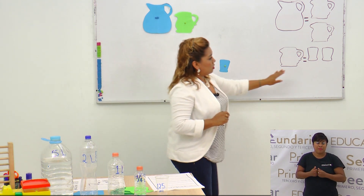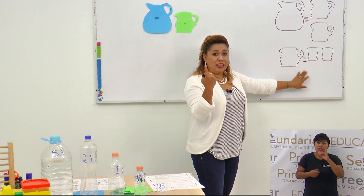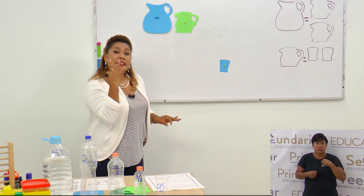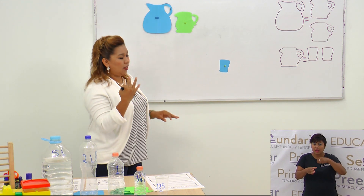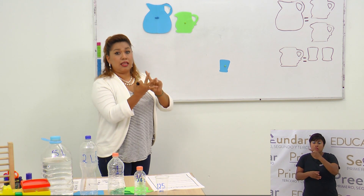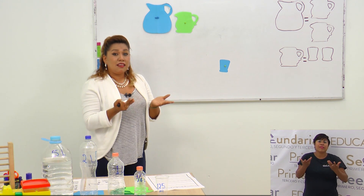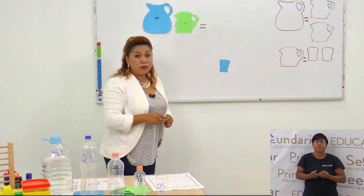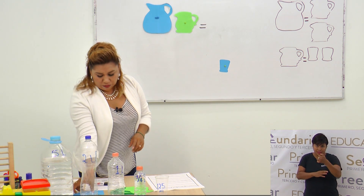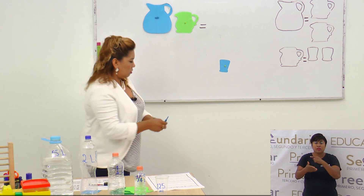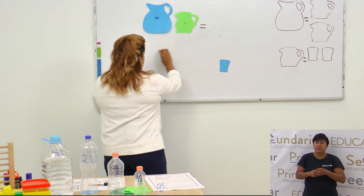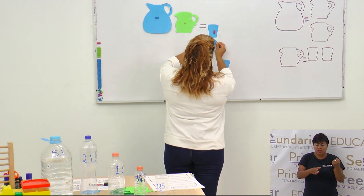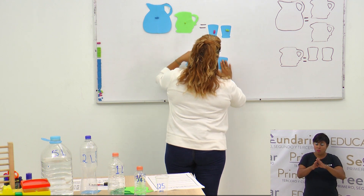¿Cuántos vasitos necesito si a una jarra mediana le caben dos vasitos y necesito llenar tres jarras medianas? Serían dos de una jarra, dos de otra y dos de otra: seis vasitos. Entonces yo necesito seis vasitos para llenar las dos jarras, tanto la grande como la mediana.